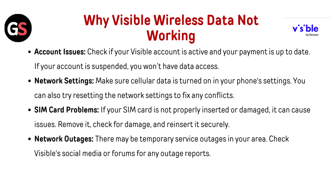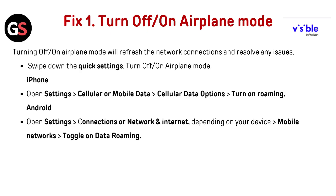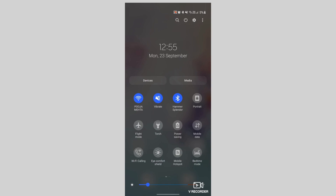Network Outages: There may be temporary service outages in your area. Check Visible's social media or forums for any outage reports. Turning Airplane Mode off and on will refresh the network connection and resolve any issues.